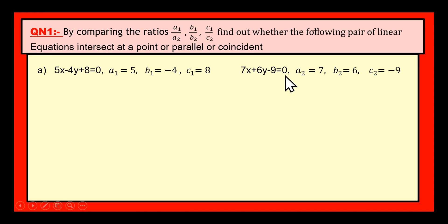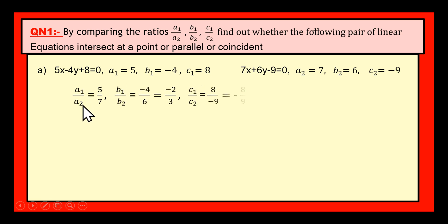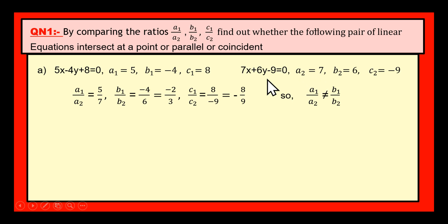The second equation is 7x plus 6y minus 9 equal to 0, which is in the form of A2x plus B2y plus C2 equal to 0. A2 means coefficient of x equal to 7, B2 means coefficient of y equal to plus 6, and C2 means constant term equal to minus 9. Now let us find the ratio A1 by A2: A1 is 5 and A2 is 7, therefore A1 by A2 is 5 by 7.